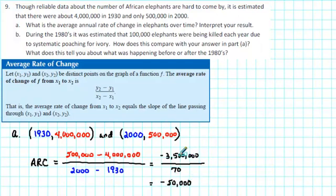Okay, now what are the units? Well, the minus 3,500,000, that's the change in the number of elephants. So, we have elephants per 70 years. So, we have minus 50,000 elephants per year. So, how do we interpret this? Well, the negative tells us that the number of elephants has been decreasing, and then the 50,000 tells us by how much: by 50,000 elephants per year.